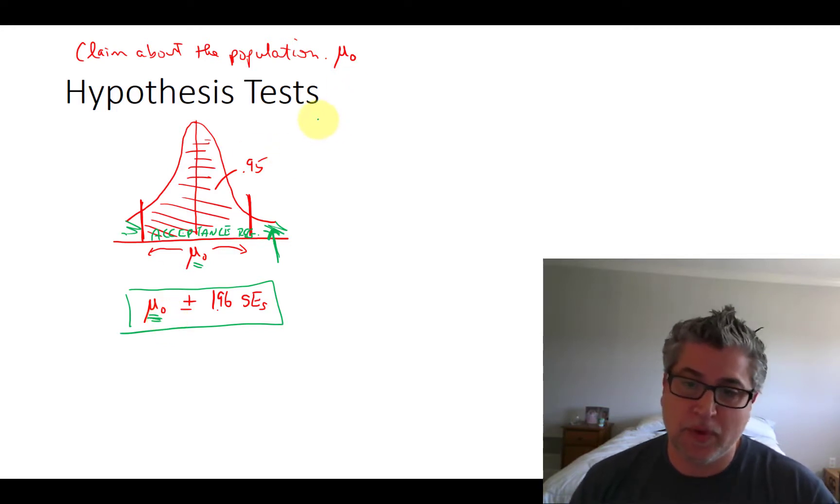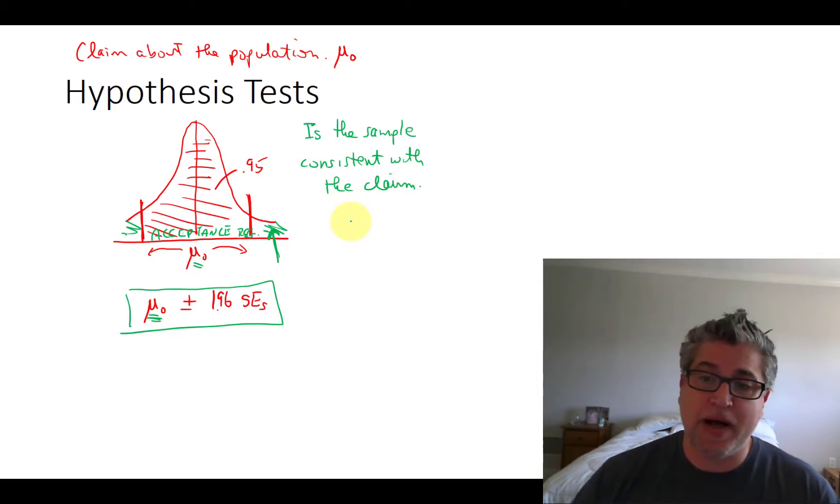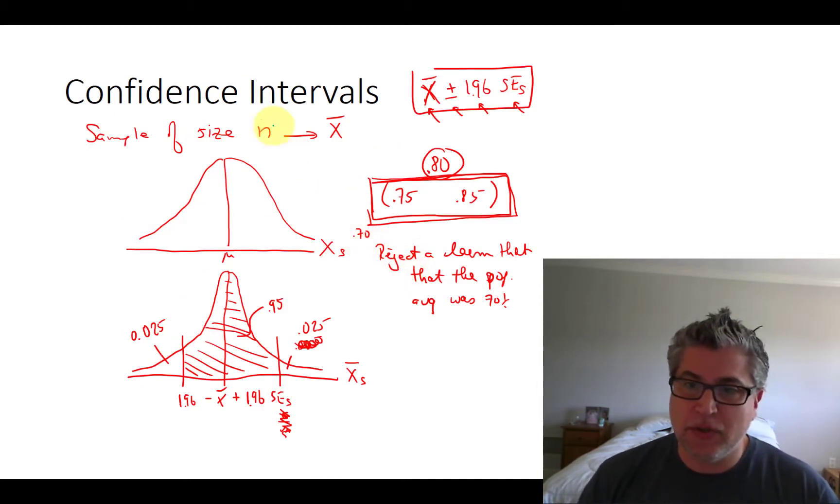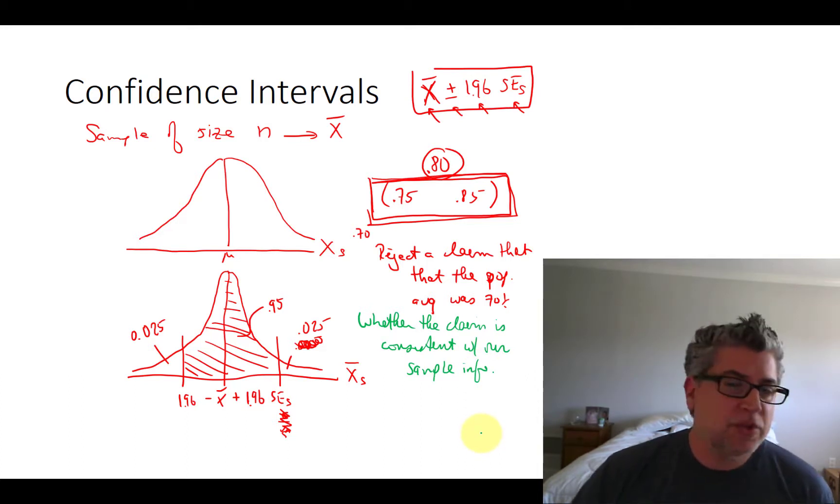So we start out with a population claim and then we check to see whether the sample is consistent with the claim. So is the sample consistent with the claim, with our hypothesis? With confidence intervals, we want to know whether the claim is consistent with our sample information.